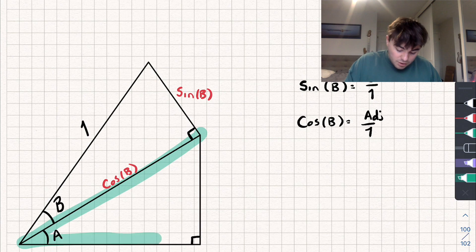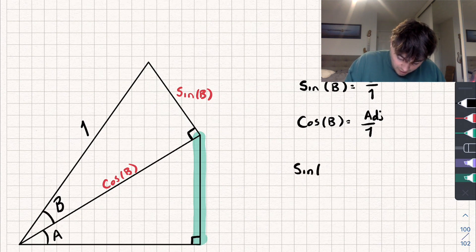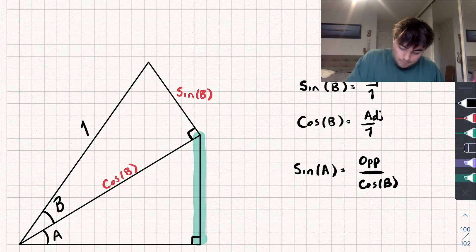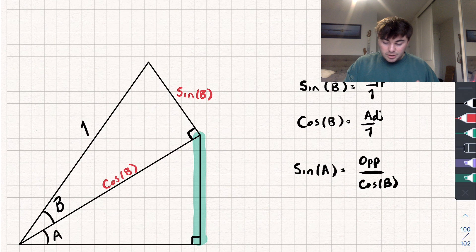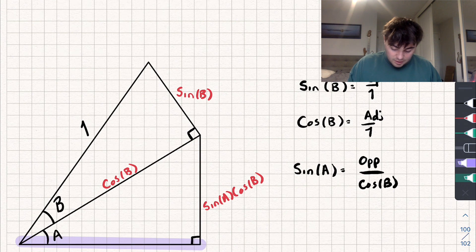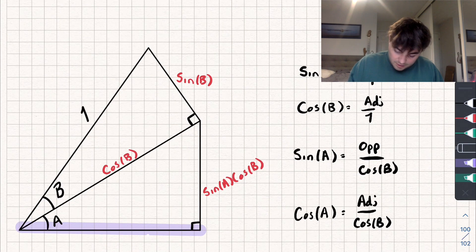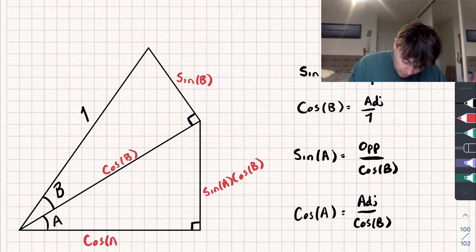What else can we work out? Well, let's now look at this right angle triangle, and say I want to find the opposite side of this triangle, which is this side here. To find that, sine of my angle A is equal to the opposite side divided by the hypotenuse, which is cosine of B. Rearranging this, we get that the opposite side is equal to sine of A multiplied by cosine of B. And finally, let's work out this adjacent side: cosine of angle A is equal to the adjacent side divided by the hypotenuse, and rearranging, we get that this side is equal to cosine of A multiplied by cosine of B.